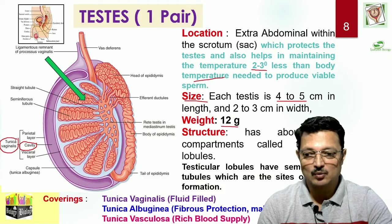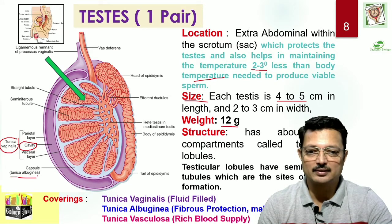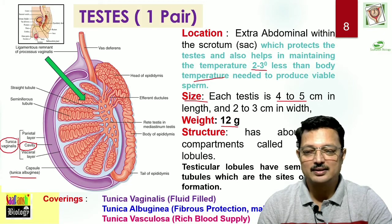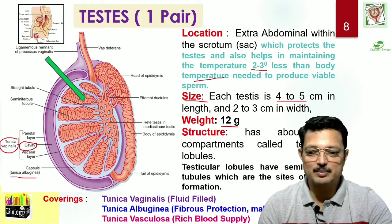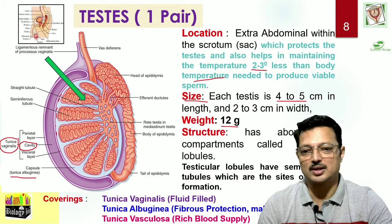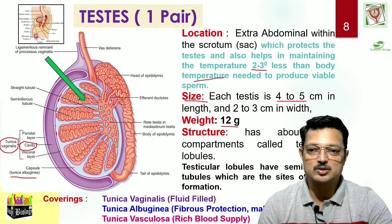Then comes the second layer, the tunica albuginea, which can be called the real protective covering, made up of fibrous tissues. The tunica albuginea makes septa inside the testes which contain seminiferous tubules. Then comes a bundle of loose connective tissues containing blood vessels which makes up the tunica vasculosa. These are the three layers that make up the coverings of the testis as well as the spermatic cord.